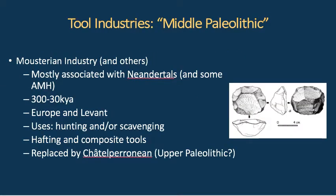Let's talk about technology. We talked about the Mousterian last time — it was used by Neanderthals and also by some humans, with use in Europe and the Middle East between 30 and 300,000 years ago. These tools were used for hunting and scavenging and were pretty sophisticated.